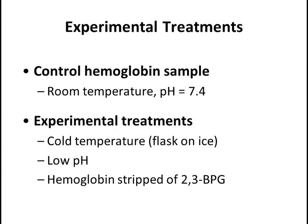In addition to constructing a normal dissociation curve, you'll also investigate how that curve will be affected by a few experimental treatments that mimic physiologic conditions. Every group will test a control sample at room temperature and at a pH of 7.4. Your group will be assigned one or more experimental test conditions: cold temperature, in which case you must keep the flask in a cold water bath throughout the experiment; a hemoglobin sample with pH adjusted to be lower than 7.4; and hemoglobin that has been stripped of BPG. These are the same factors mentioned in the previous tutorial as factors that can change the affinity of binding between hemoglobin and oxygen.